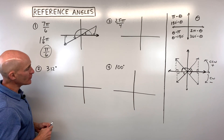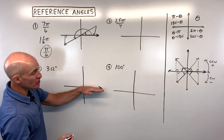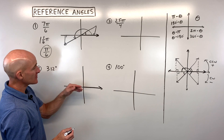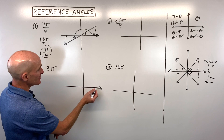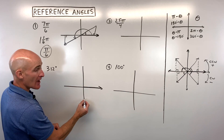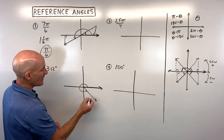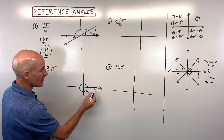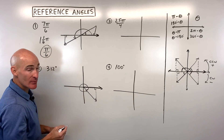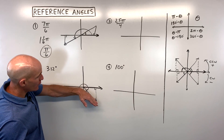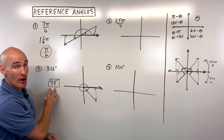Let's look at number 2: 312 degrees. Start along the positive x-axis — that's our initial ray. It's a positive angle, so we go counterclockwise: 90, 180, 270, plus another 42 degrees puts us right about there. Drop a perpendicular to the x-axis. It's going to take another 48 degrees to reach that x-axis, so 48 degrees is our reference angle.